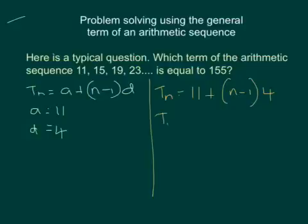When we expand that out, we get 11 plus 4n minus 4. And if we simplify that by combining the 11 and the 4, we get the general term for this particular situation is equal to 4n plus 7.